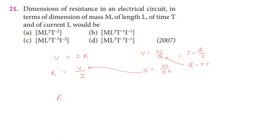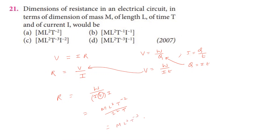Substituting: resistance equals potential divided by current, which equals work done divided by current into time, divided by current I. Work done has dimension formula ML²T⁻². Dividing by I into I gives I². Then dividing by T gives T⁻³. So we get ML²T⁻³ divided by I², giving I⁻².